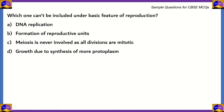Here's the next question. Which one can't be included under the basic feature of reproduction? Remember, the word here is 'can't,' meaning we should find out which of these is NOT included as a basic feature of reproduction. We have four options: A — DNA replication, B — formation of reproductive units, C — meiosis is never involved, D — growth due to synthesis of more protoplasm.